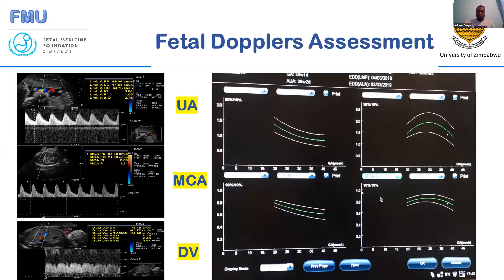The Dopplers also have nomograms. As you can see, we have two graphs showing the resistive index and the pulsatility index — the umbilical artery on the left column and the MCA on the right column. These values shown were falling within the normal ranges.